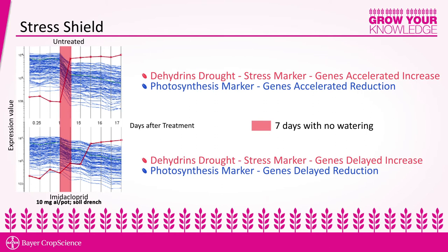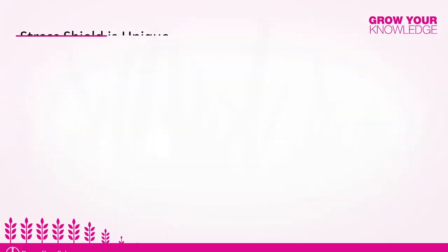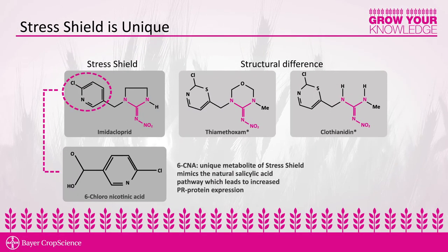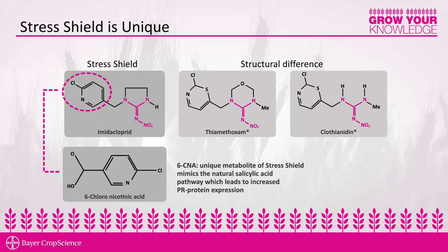Stress Shield is a unique molecule, and when it is put in the plant, it metabolizes to produce a specific compound called 6-CNA. This metabolite is only formed from Stress Shield, not from other neonic insecticides.